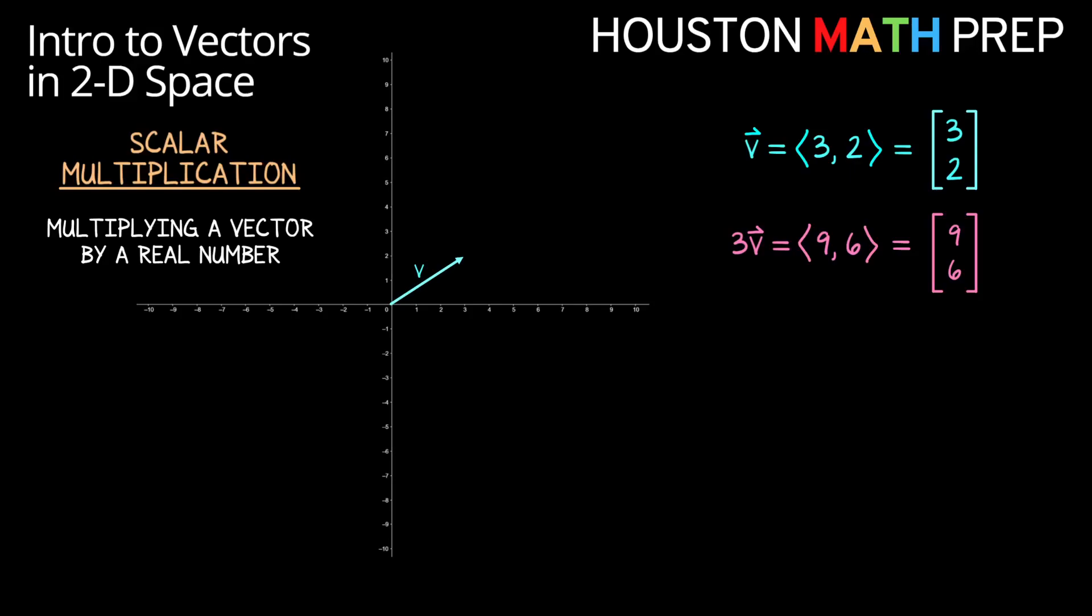This is actually pretty intuitive here. If we take our vector V here and multiply it by the number 3 for example, then we simply multiply each component of vector V by that number 3 and we get the vector (9,6).